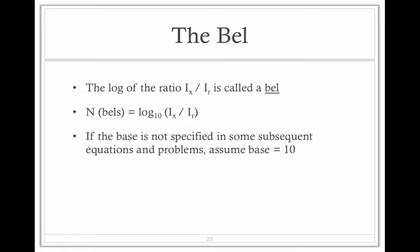So the log of the ratio, the absolute over the absolute reference, is called a bell. The number of bells equals log base 10, Ix over Ir. Just assume that the base is going to be 10.